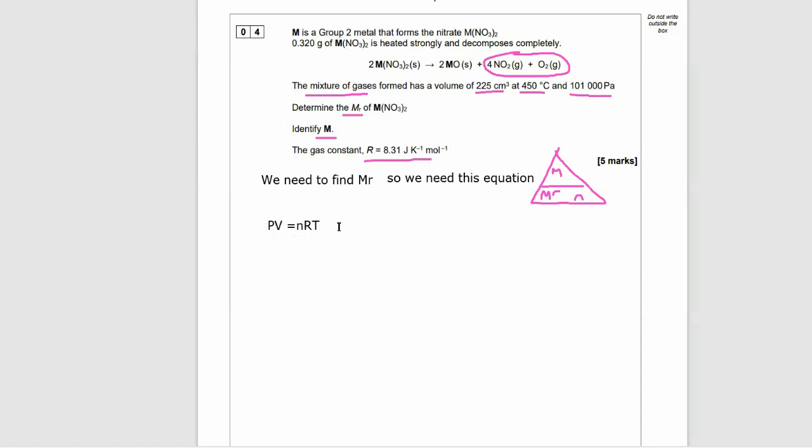We just need to rearrange this, find the moles, make moles the subject, whack that in there with the 0.320 grams into the mass equation, and we'll find the MR. There's one little tricky bit because we've got a mixture of five gases, but we'll come on to that in a second.